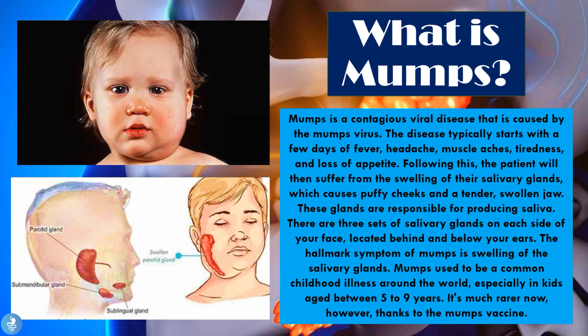From the definition of the mumps virus, we get that it's a contagious viral disease caused by the mumps virus. The hallmark symptom is the swelling of the salivary glands. There are actually three sets of salivary glands: the first and largest is the parotid gland, then we have the submandibular gland, and then the sublingual gland. One set is found on the right side of the face and the other on the left. These glands are very important as they help us produce saliva, which keeps our mouths moist and plays a role in digestion.